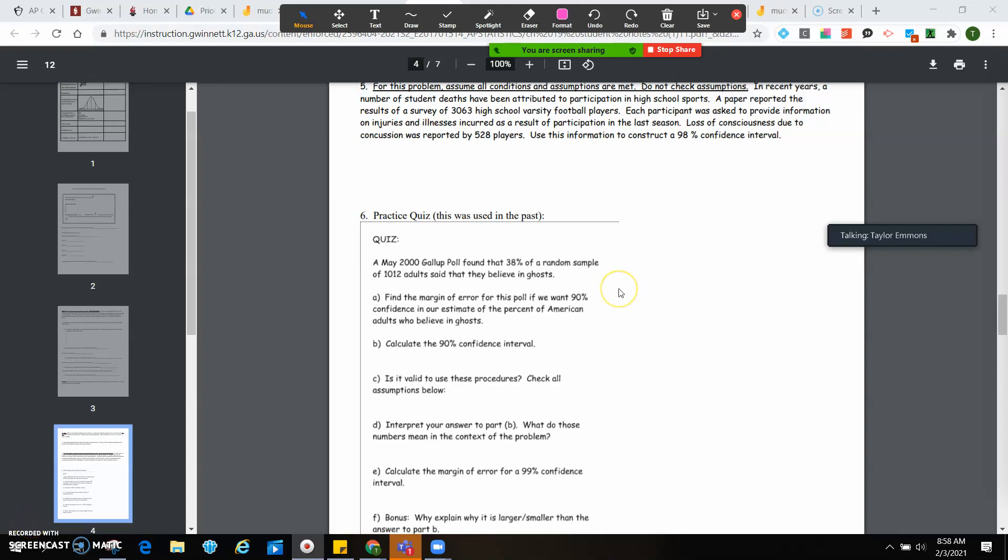Okay, so it says for this problem, assume all conditions and assumptions are met. Do not check assumptions, so we're not going to check independence and all of that nonsense. In recent years, a number of students' deaths have been attributed to participation in high school sports. A paper reported the results of a survey of 3,063 high school varsity football players. Each participant was asked to provide information on injuries, illnesses incurred as a result of participation in the last season. Loss of consciousness due to the concussion was reported by 528 players. Use this information to construct a 98% confidence interval.